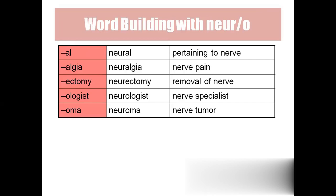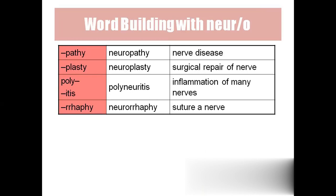Neural: pertaining to the nerve. Neuralgia: nerve pain. Neurectomy: removal of the nerves. Neurologist: the nerve specialist. Neuroma: nerve tumor. Neuropathy: nerve disease. Neurorrhaphy: surgical repair of the nerve. Polyneuritis: inflammation of many nerves. Neurorrhaphy also refers to suturing the nerves.